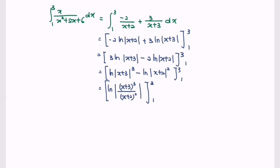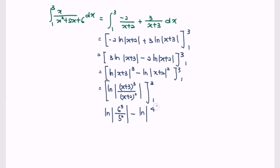Substitute the limits. Substituting x equals 3 we obtain ln(6³ over 5²), minus substituting x equals 1 we have ln(4³ over 3²).